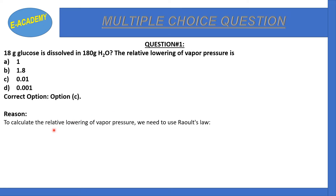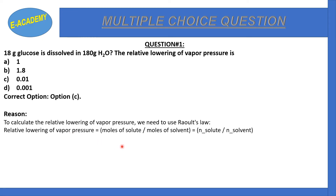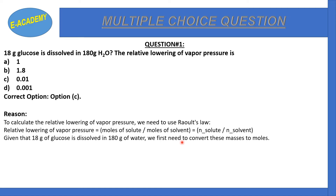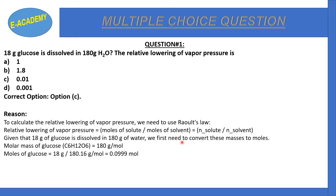Relative lowering of vapor pressure is equivalent to moles of solute divided by moles of solvent. Moles are calculated using the formula: mass divided by molar mass. For glucose, the molar mass is 180 grams per mole, so moles of glucose will be mass divided by molar mass.